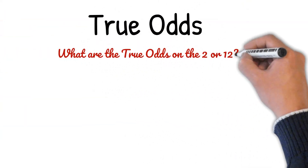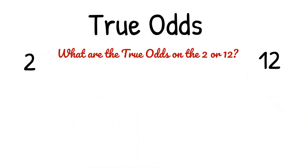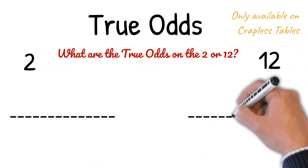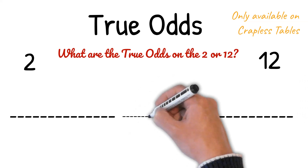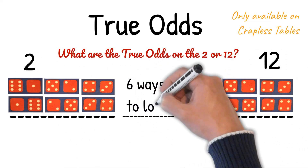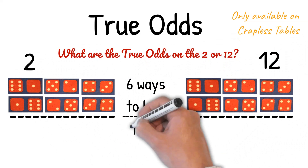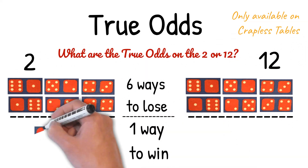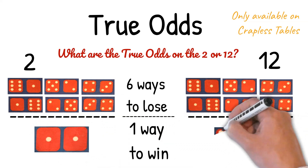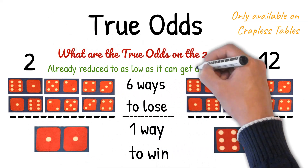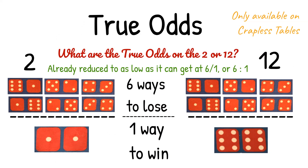What are the true odds on the 2 or 12? Again, these are only available on crapless tables. There are 6 ways to lose and only 1 way to win. This is already at its lowest reduction: 6 to 1, or 6 to 1 as a ratio.